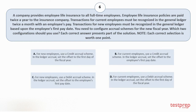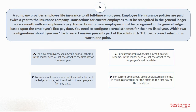Your options are: A. For new employees, use a credit accrual scheme. In the ledger accrual, set the offset to the first day of the fiscal year. B. For current employees, use a credit accrual scheme. In the ledger accrual, set the offset to the employee's first pay date. C. For new employees, use a debit accrual scheme. In the ledger accrual, set the offset to the employee's first pay date. D. For current employees, use a debit accrual scheme. In the ledger accrual, set the offset to the first day of the fiscal year. The correct answers are option B and D.